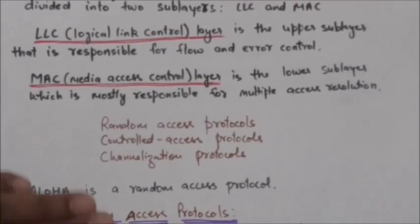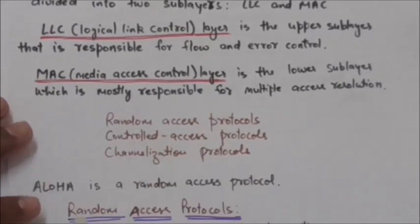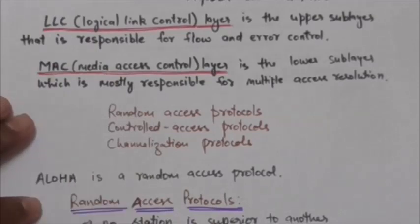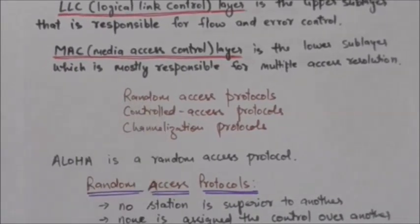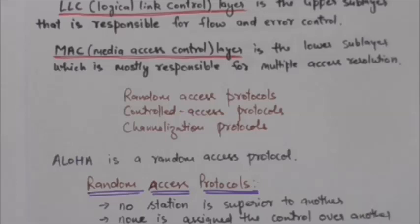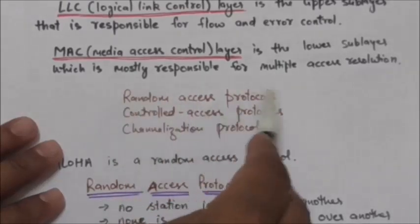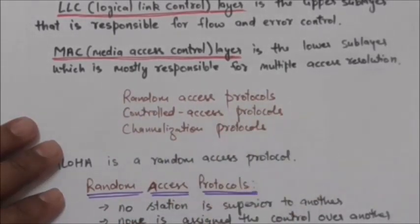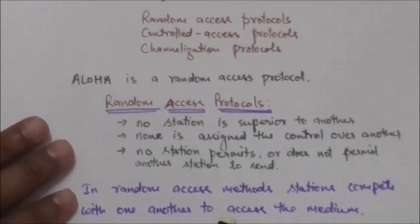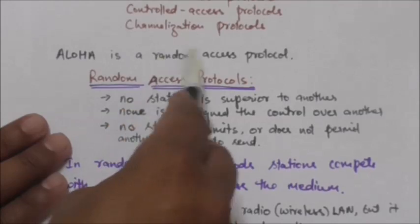We will study about the LLC and MAC layers in another tutorial. In this tutorial we will study only about Aloha protocol. When nodes are connected using a common link called a multipoint or broadcast link, a multiple access protocol is needed to coordinate access to the link. Many protocols have been devised to handle access to the shared link and they are categorized into three categories: random access protocols, controlled access protocols, and channelization protocols.